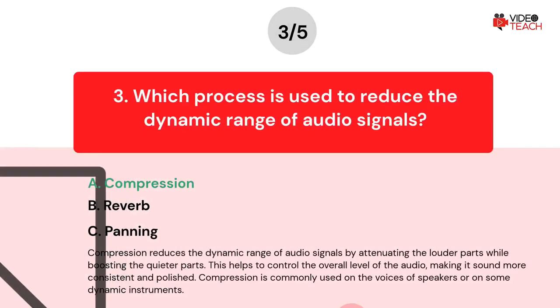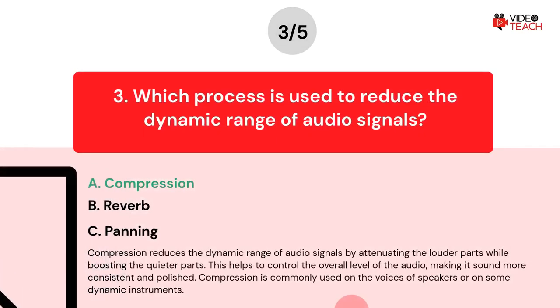The correct answer is Option A. Compression reduces the dynamic range of audio signals by attenuating the louder parts while boosting the quieter parts. This helps to control the overall level of the audio, making it sound more consistent and polished. Compression is commonly used on the voices of speakers or on some dynamic instruments.